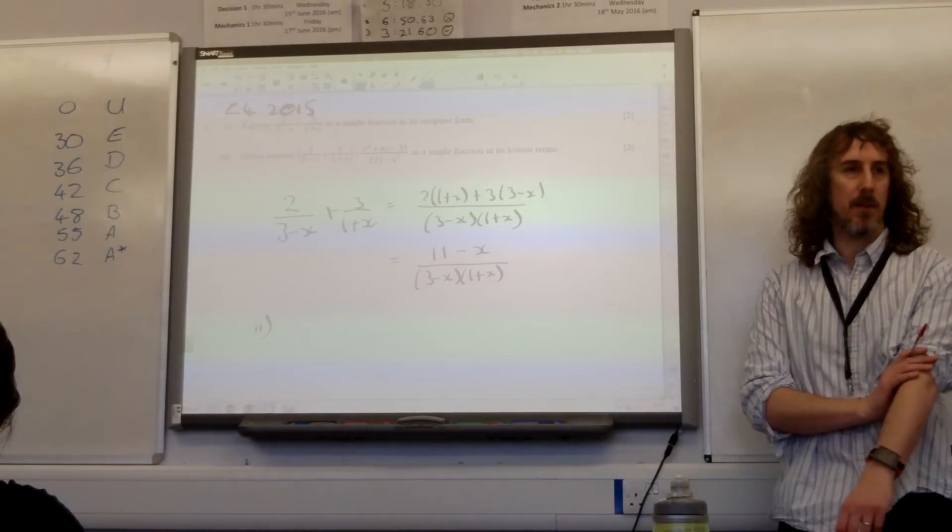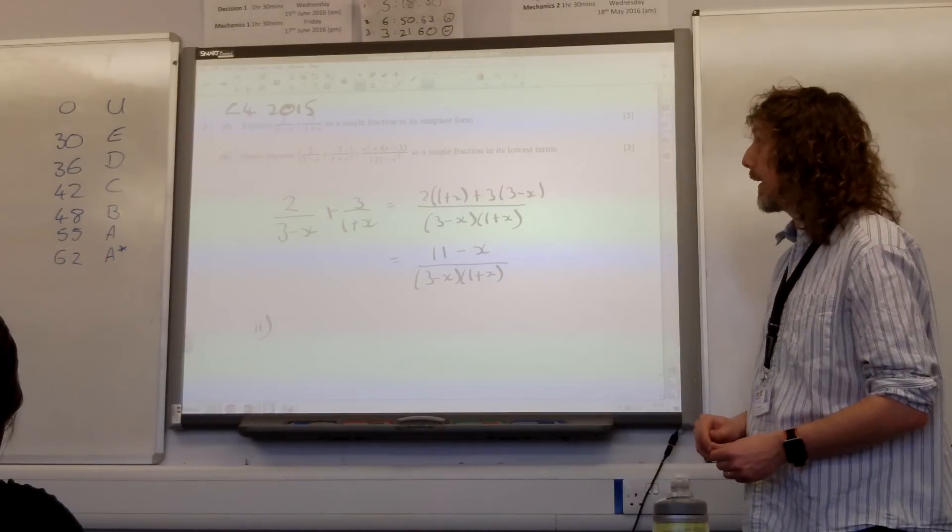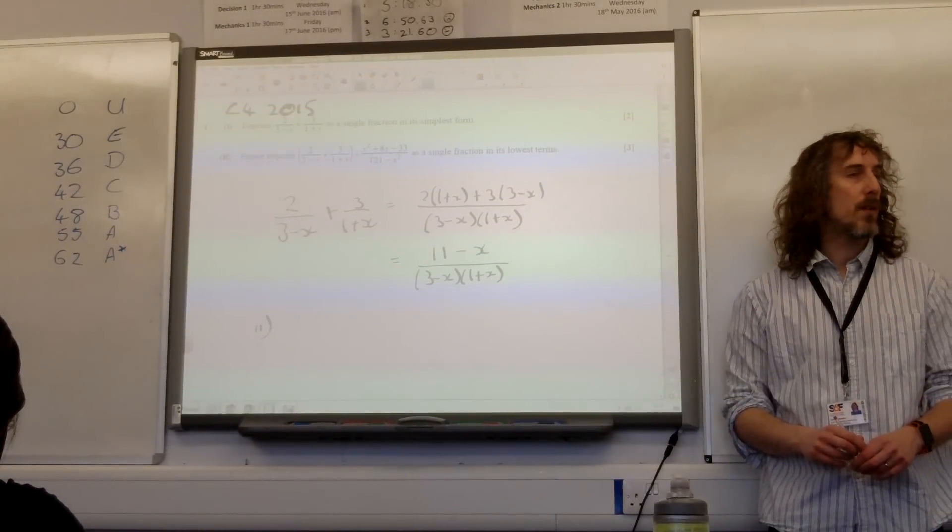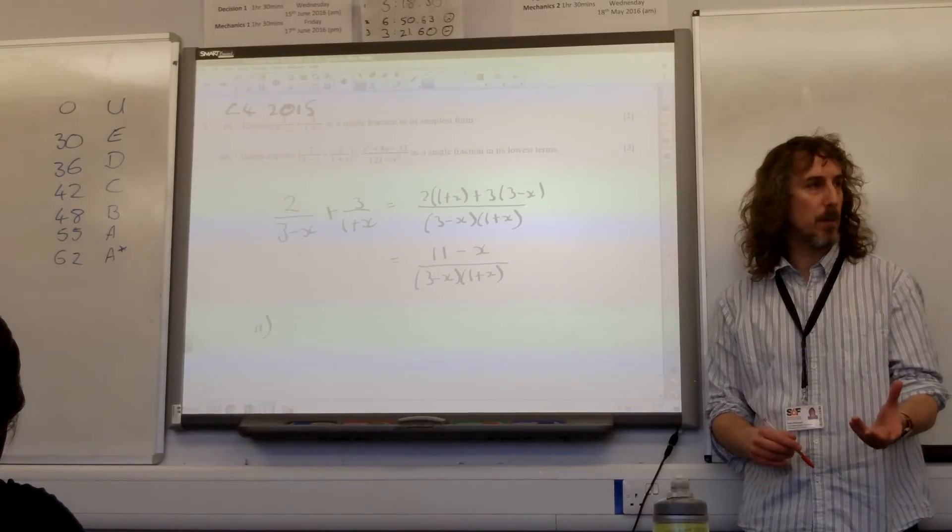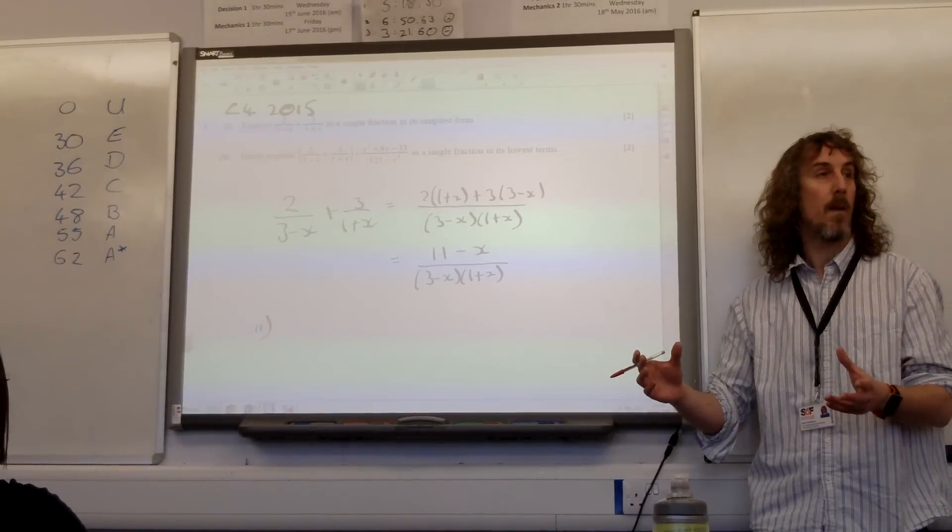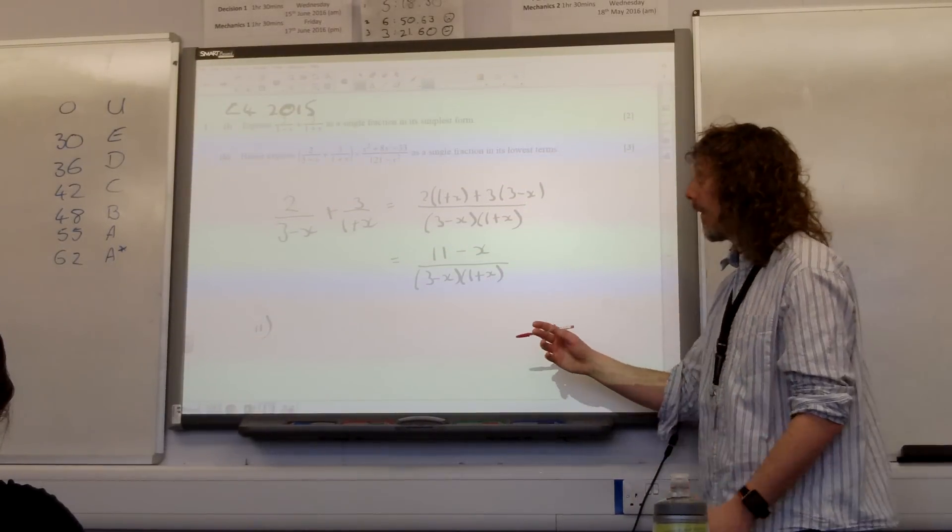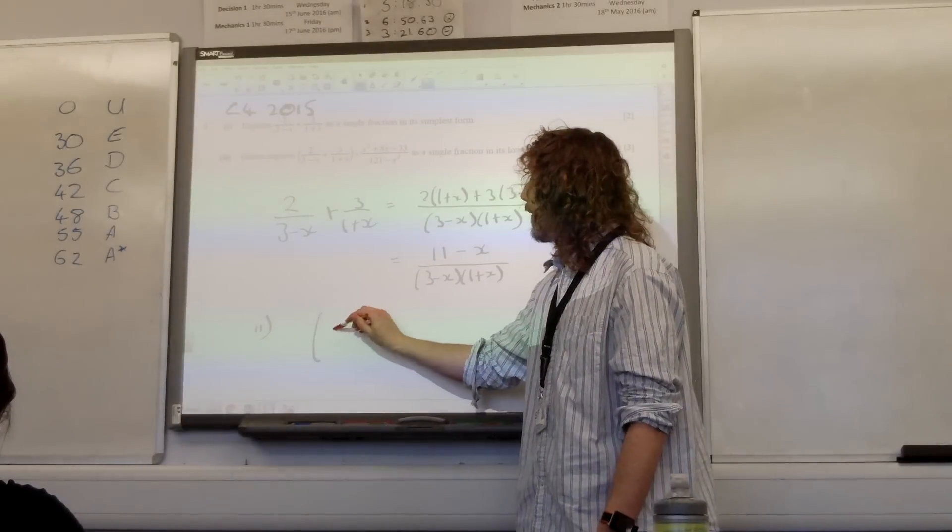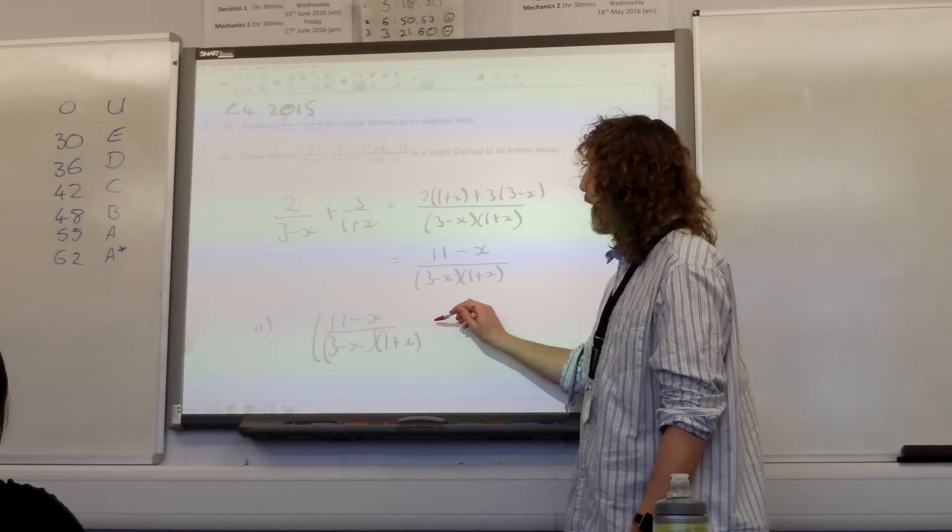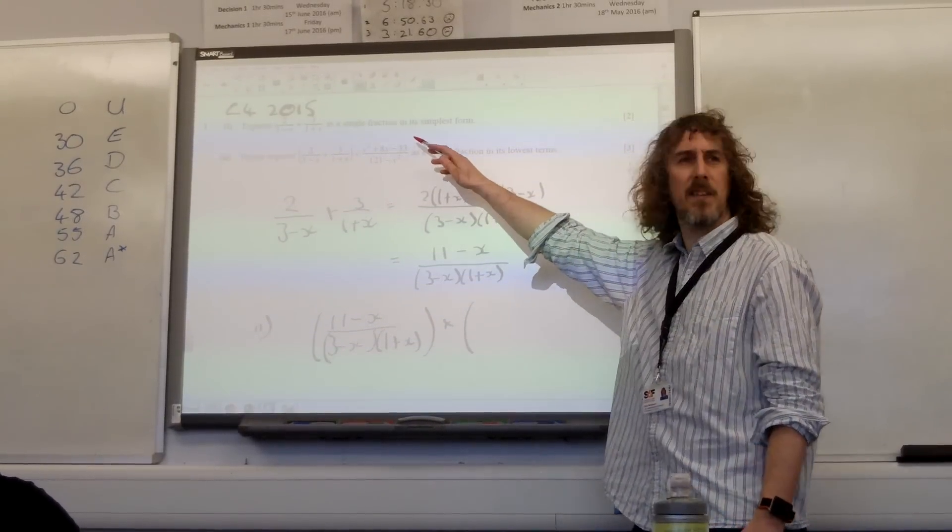Part two. Hence, express that part one bit multiplied by another fraction as a single fraction in its lowest terms. Now, the thing that went wrong for lots of us with this is for some reason we seem to have an instinct to multiply out, when multiplying out was the wrong thing to be doing. These questions are always all about factorizing. So multiplying out is the real misstep. So actually, if we're going to be factorizing, we know the first part is 11 minus x over 3 minus x times 1 plus x. And we're multiplying that by, so we've got to try and factorize this. x squared plus 8x minus 33.